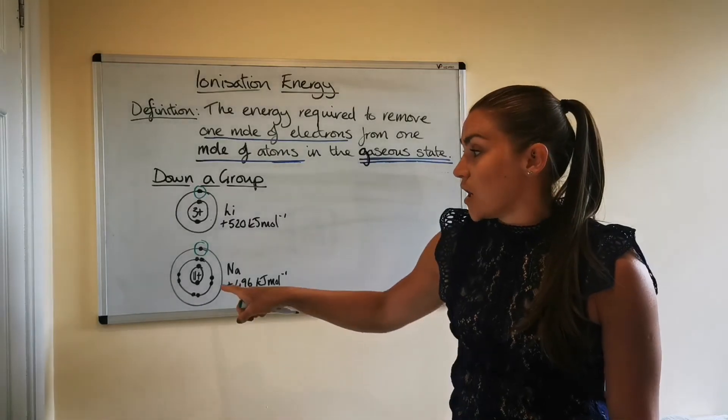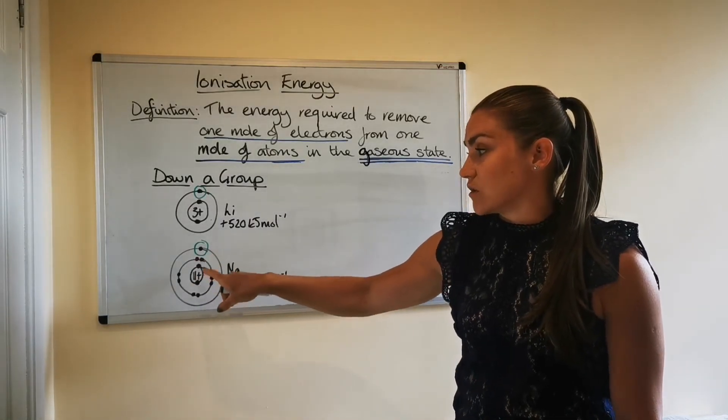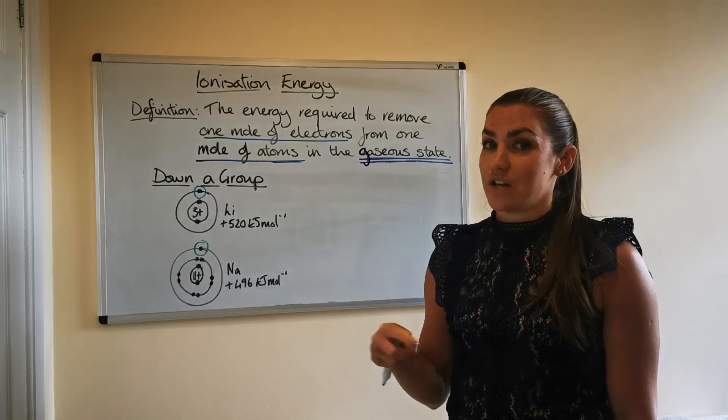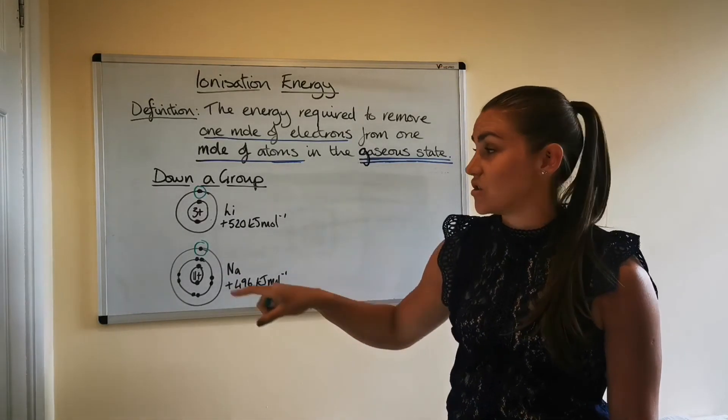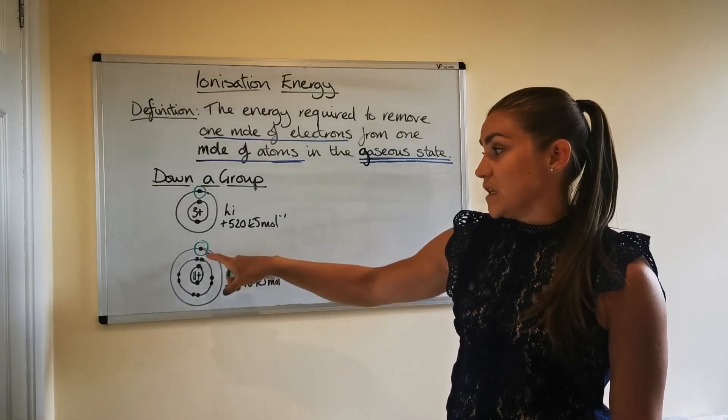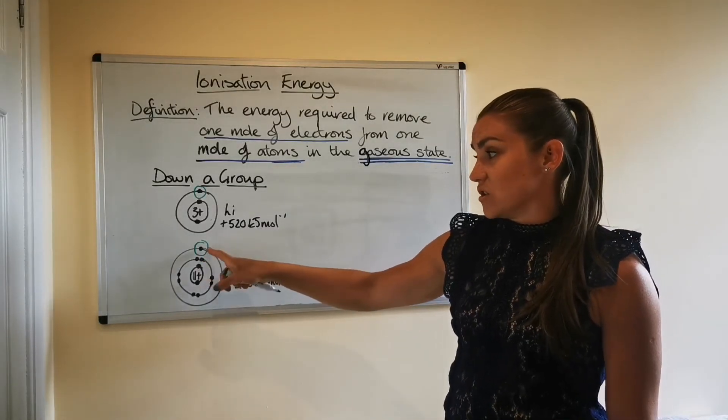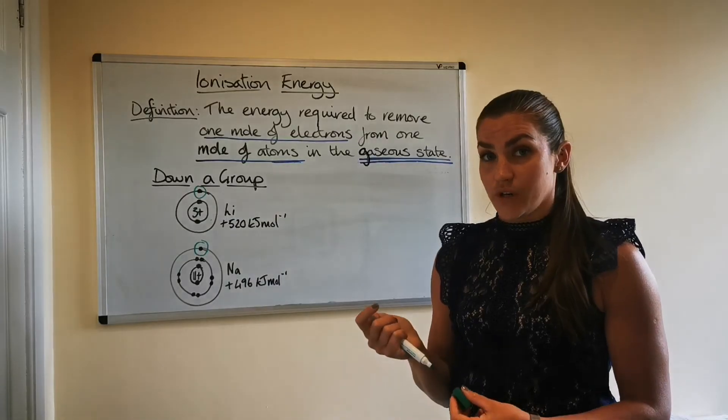So the nuclear charge isn't as strong. So even though sodium actually has more protons in its nucleus, so therefore a bigger nuclear charge, because it's got increased or more occupied energy levels, that nuclear charge is actually shielded. So this outer electron actually isn't as attracted to the nucleus as it would be if there was less shielding and it was closer.